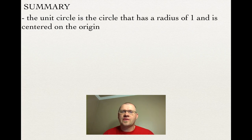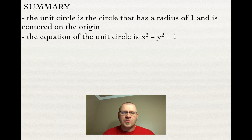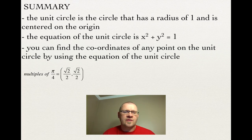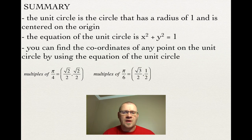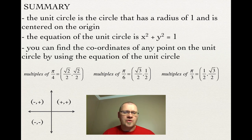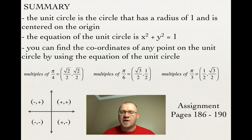In summary, the unit circle has a radius of 1 centered on the origin, with equation x squared plus y squared equals 1. Multiples of pi over 4 have coordinates of root 2 over 2 and root 2 over 2. Multiples of pi over 6 have coordinates of root 3 over 2 and 1/2. Multiples of pi over 3 have coordinates of 1/2 and root 3 over 2. The only thing that changes is the sign based on the quadrant: quadrant 1 both positive, quadrant 2 x negative, quadrant 3 both negative, quadrant 4 y negative. Your assignment is on pages 186 to 190.